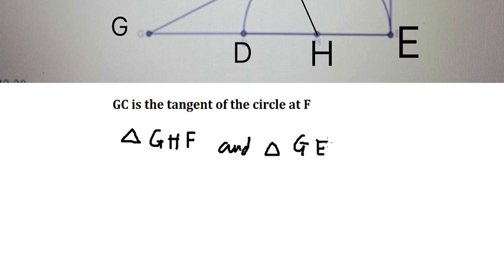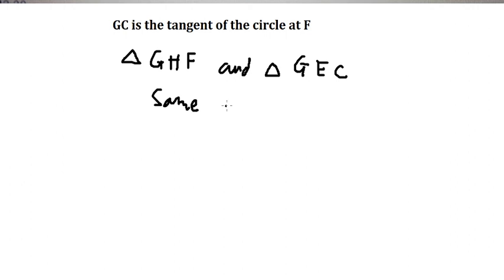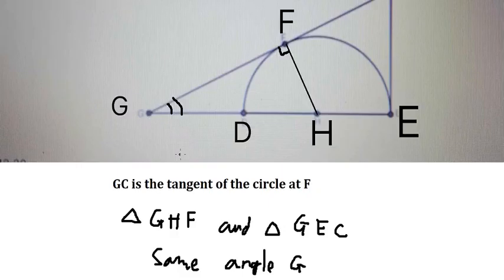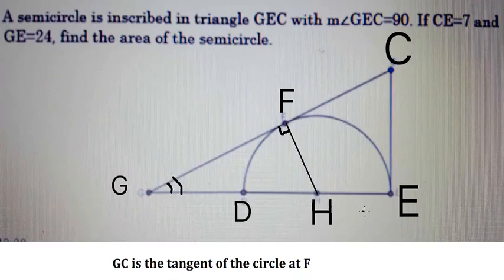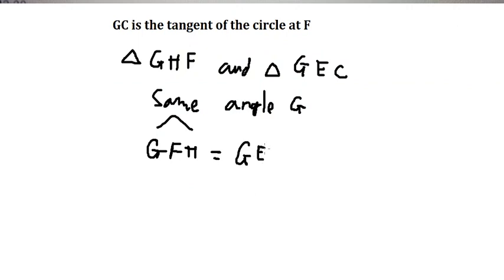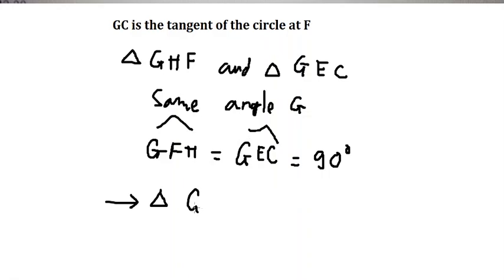We can see that the two triangles have the same angle G. The angle GFH equals the angle GEC, and that is 90 degrees. So that means triangle GHF and triangle GEC are similar.